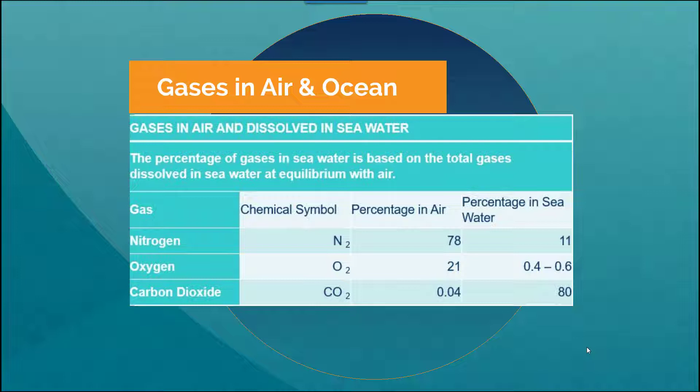The percentage of gases in seawater is based on the total gases dissolved in the seawater as opposed to the percentage that comprises the atmosphere. For nitrogen and oxygen there's a significantly lower percentage dissolved in seawater compared to what is making up the atmosphere, specifically that oxygen level. Seawater only comprises 0.4 to 0.6% oxygen as opposed to 21% in our atmosphere.